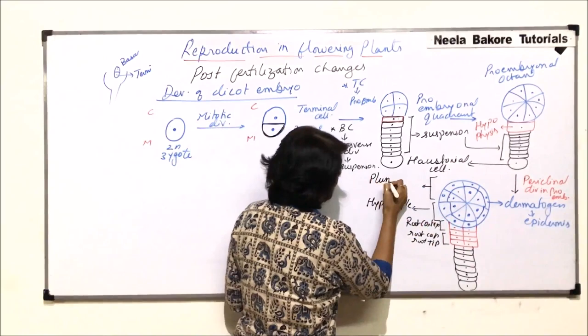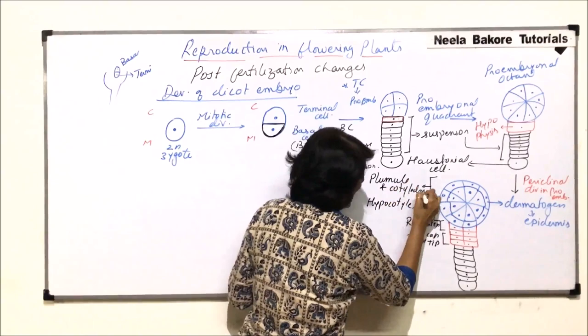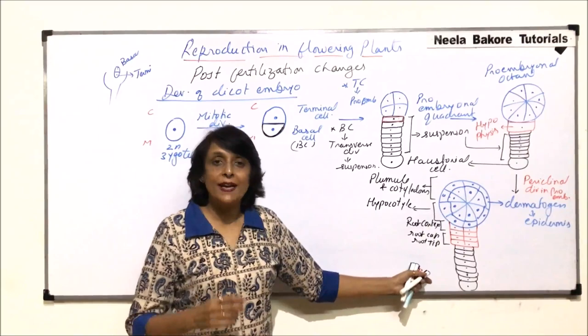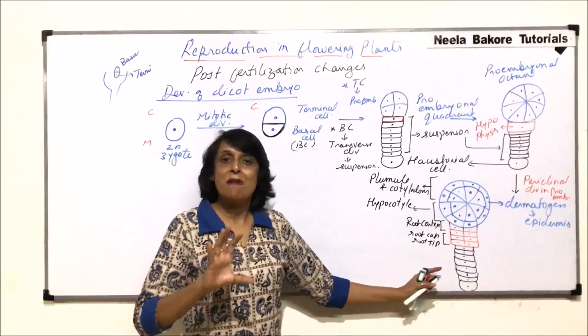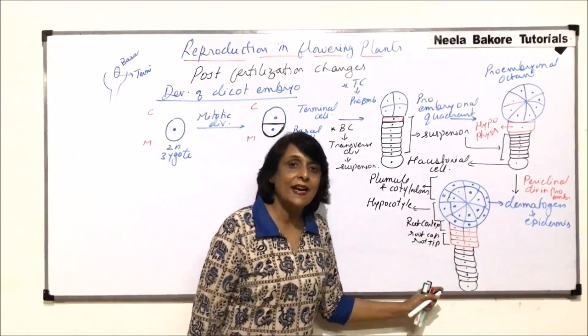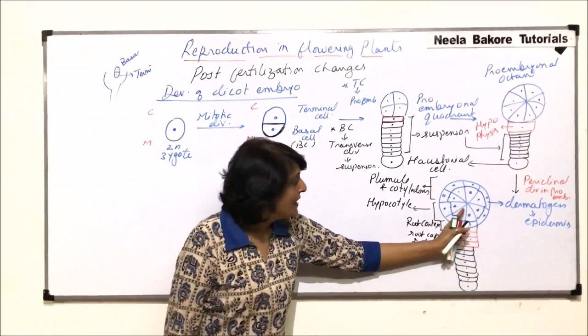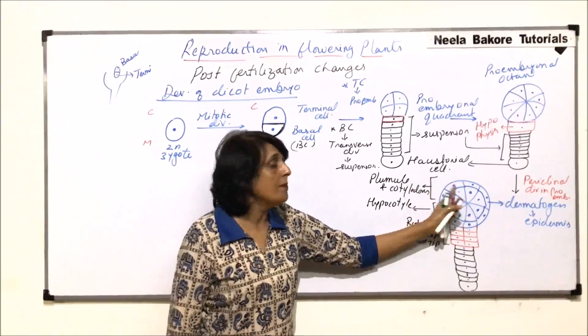The upper half of the proembryo — towards the chalaza — gives rise to the plumule and cotyledons. We draw the diagram in such a manner to give an idea of which part of the proembryo gives rise to which part of the embryo. This is a schematic representation: the root tip and root cap come from hypophysis cells, root cortex from upper hypophysis cells, hypocotyl from the lower proembryo, and cotyledons and plumule from the upper proembryo.